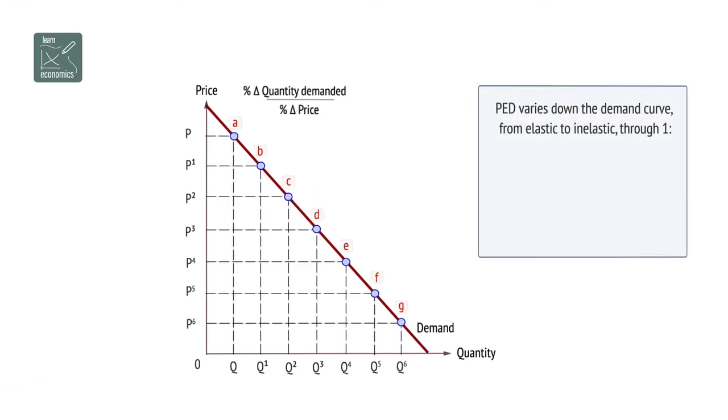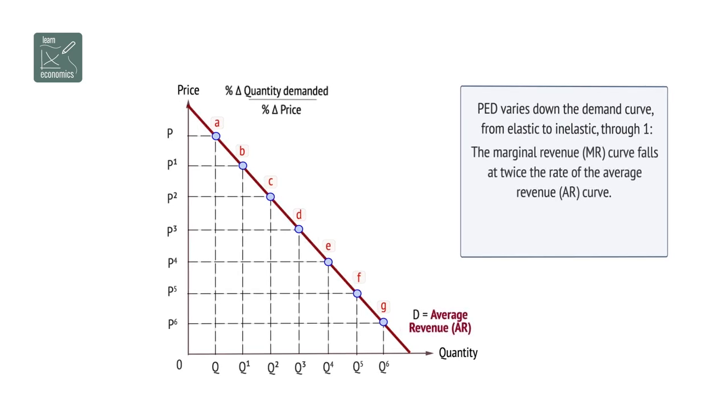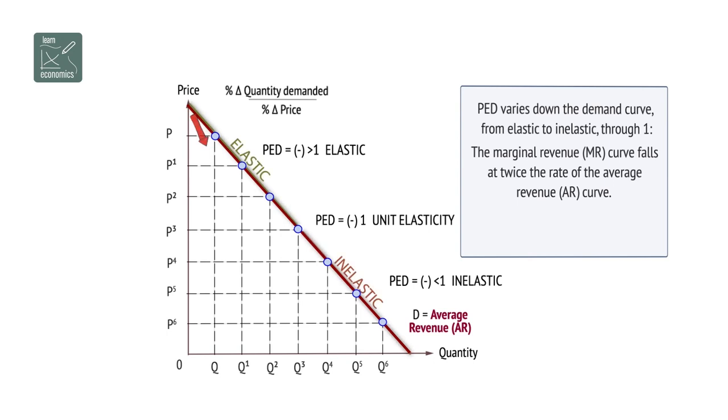PED varies down the demand curve from elastic to inelastic through 1. Here, the marginal revenue, MR curve, falls at twice the rate of the average revenue, AR curve. MR is at 0 when PED on the AR curve equals 1.